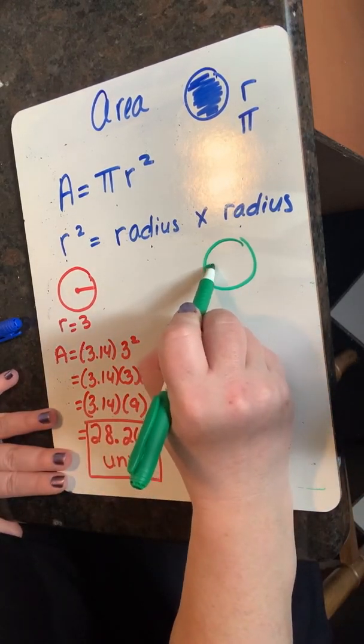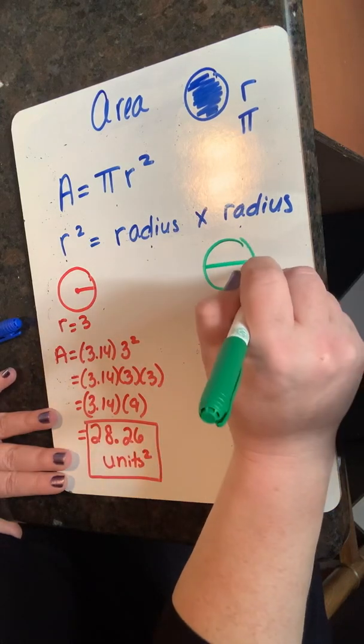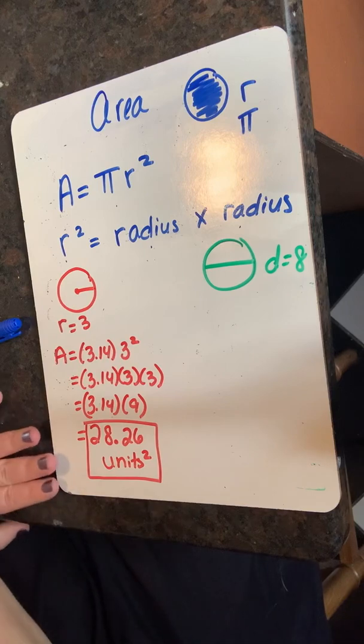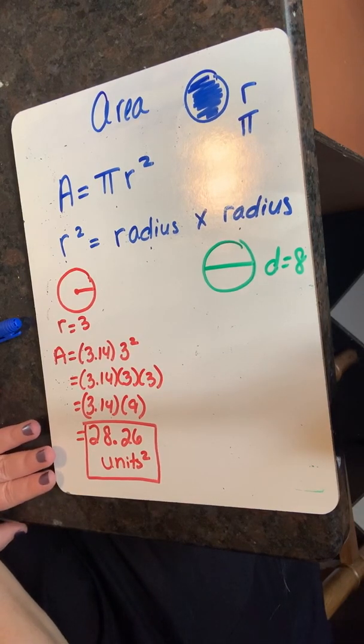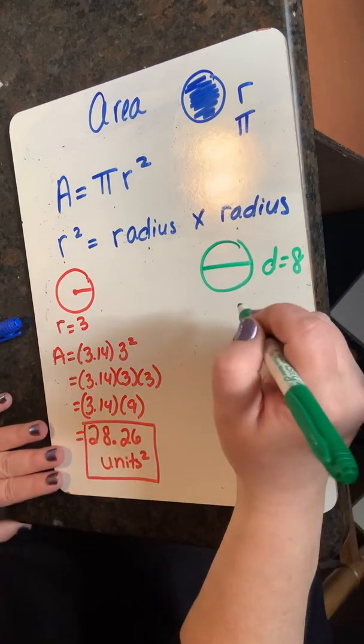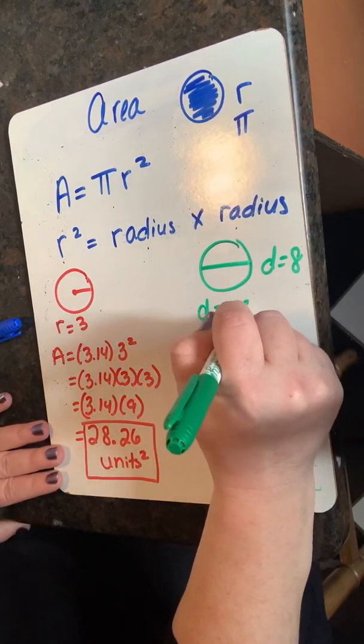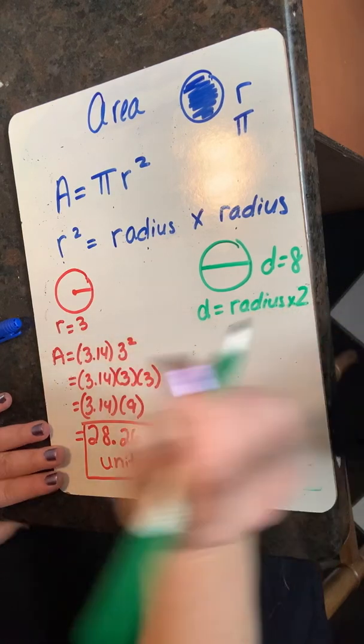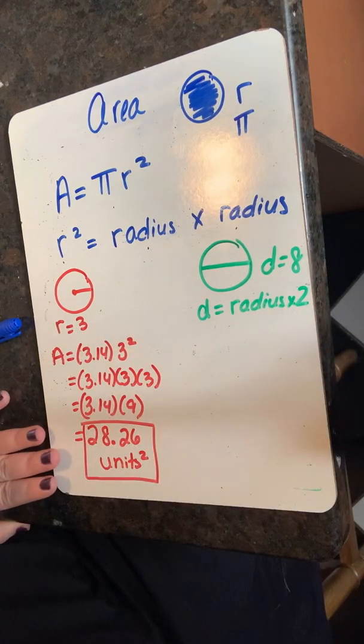We're now going to look at a circle with a diameter of eight. Ahora vamos a ver un círculo con un diámetro de ocho. I know that diameter equals radius times two. Sé que el diámetro es igual al radio por dos.